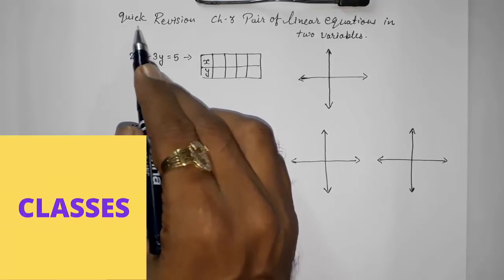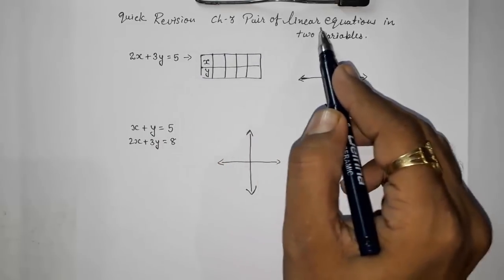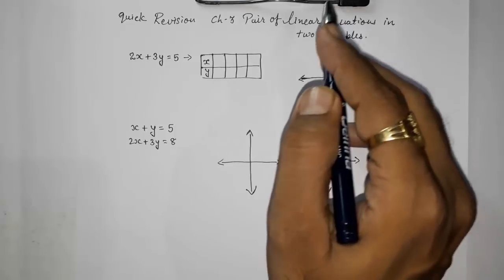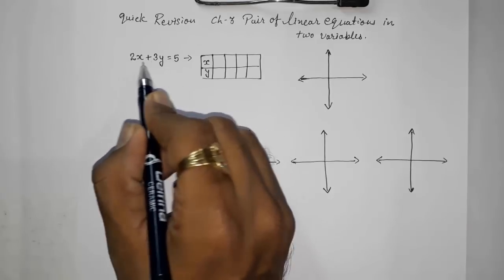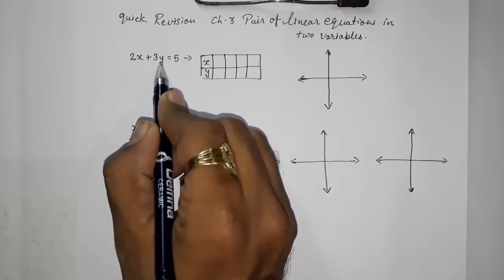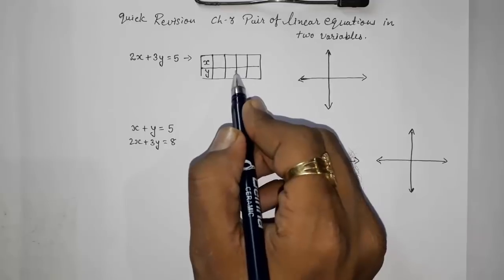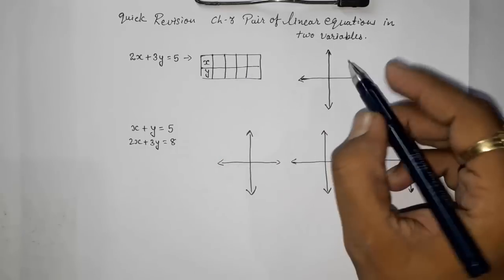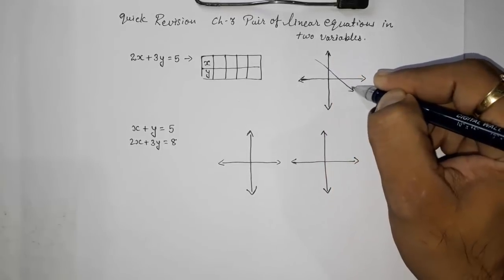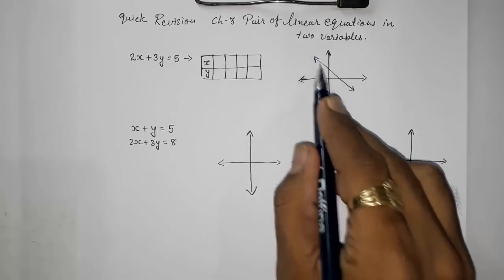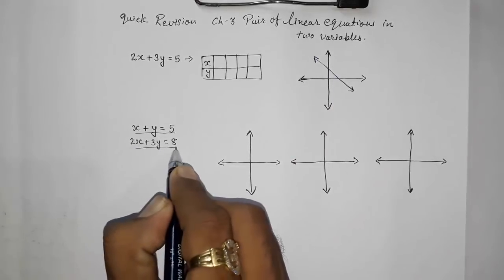Hello friends, today we are going to do a quick revision of CBSE Class 10th Maths Chapter 3: Pair of Linear Equations in Two Variables. In 9th standard, we learned pair of linear equations in one variable. There we were putting some values of x and finding y, or putting values of y and finding x, finding four solutions, representing those solution coordinates on the graph, and getting a line.